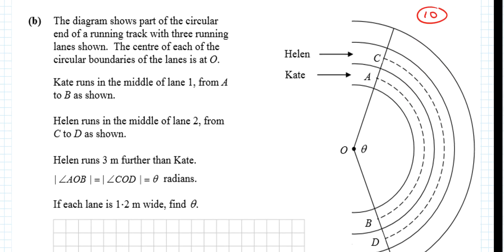Now, 10 marks going for this question. The diagram shows part of a circular end of a running track with three running lanes shown. The centre of each of the circular boundaries of the lane is at O.